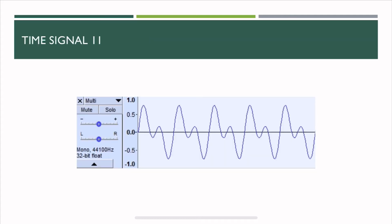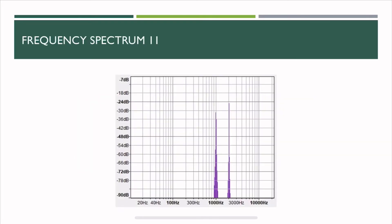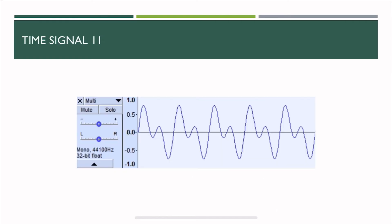This is a more complicated signal because I have mixed two signals together, so the frequency spectrum should show me two lines. As you can see here, there are two lines at 1000 Hertz and 2000 Hertz, which clearly tells me that there are two frequencies present in this given time signal.